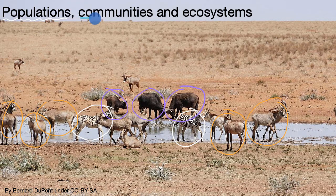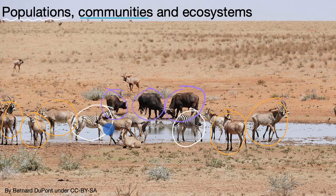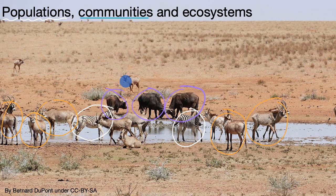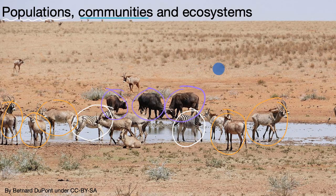So if that is a population, what is a community? Well, a community is all of the living species that live in the same area. So we have a community of animals that is made up of populations of buffalo, of zebra, and of antelope. And when we're talking about communities, we're not necessarily just talking about large animals. We could be talking about populations of mosquitoes, populations of fish, or a population of a certain species of plant — collectively all of the living organisms together.